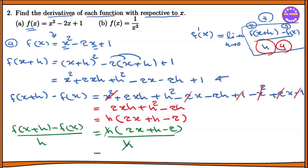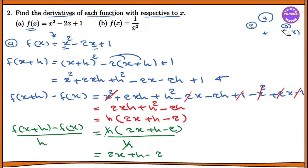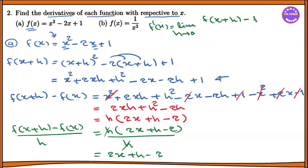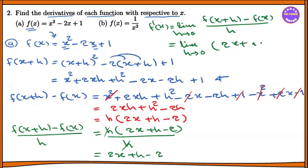This gives 2x plus h minus 2. Taking the limit as h tends to 0, substituting h equal to 0, we get 2x plus 0 minus 2. So we can write f prime of x equal to 2x minus 2.